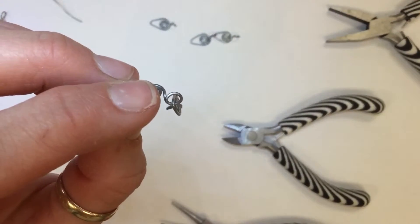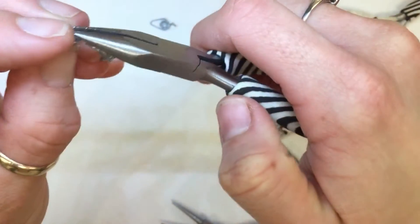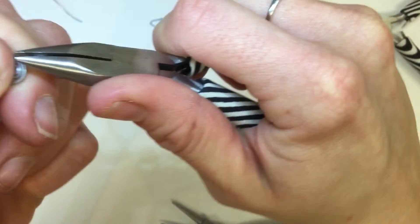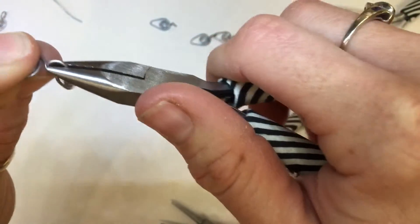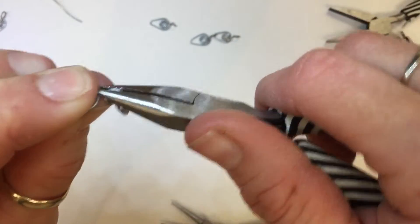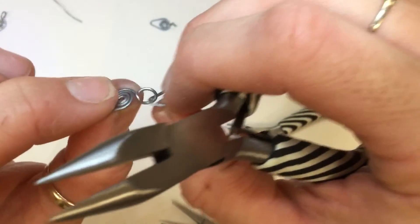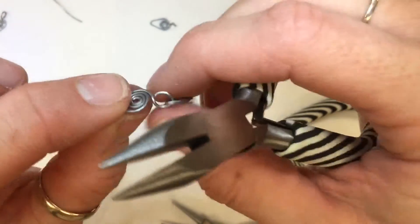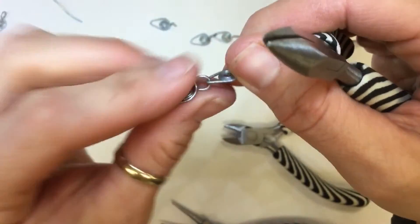To close it, take your flat nose pliers and just give it a little twist. This will be similar to the jump rings that we're going to do. For jump rings, you want to twist to close them. Don't push and pull them. That should be linked under there.